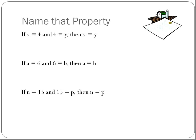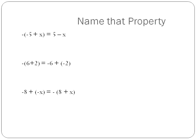One last property: when you have a negative times an addition problem, or the opposite of a sum problem, you can distribute the negative — the opposite of this number plus the opposite of this number. For example, the opposite of 6 plus the opposite of 2, or the opposite of 8 plus the opposite of x. It's the opposite of a sum — that's what this property is.